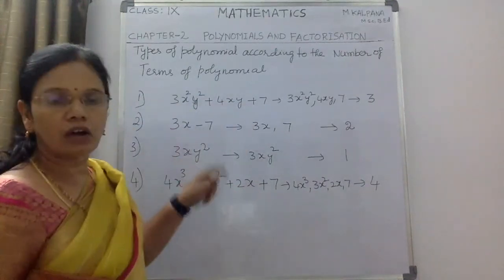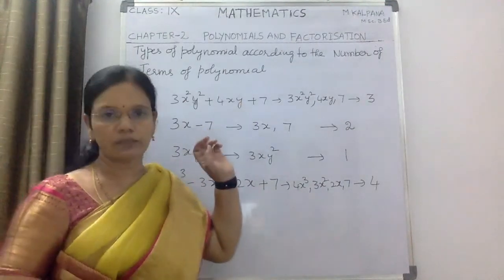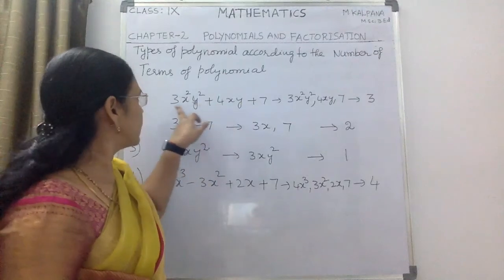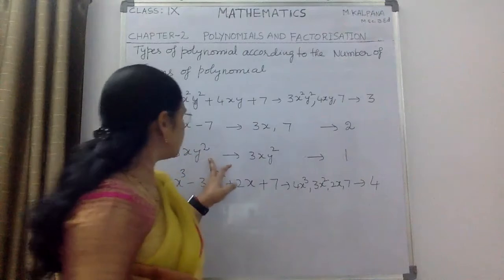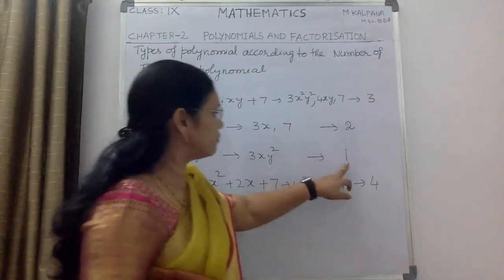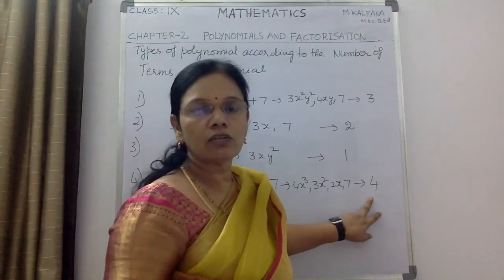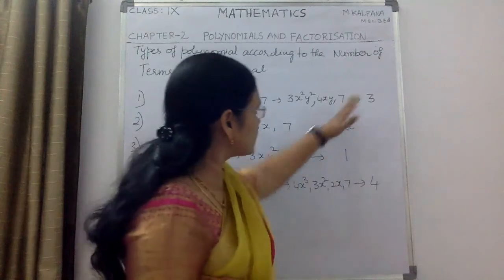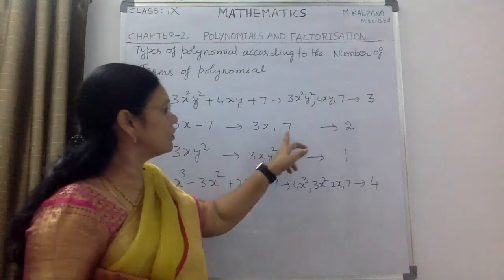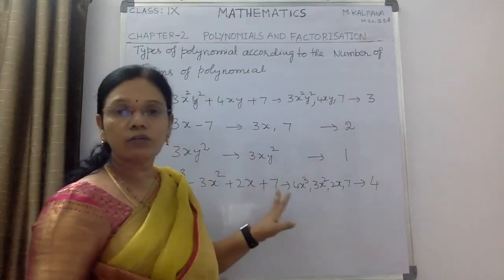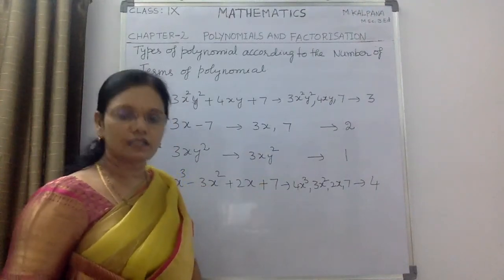So if we observe all these polynomials, each polynomial has a different number of terms. The first polynomial has 3 terms, the second polynomial has 2 terms, the third polynomial has only 1 term, and the fourth polynomial has 4 terms. So based on the number of terms given, we can divide the polynomials. Though all of these are polynomials, we give some special names to each polynomial based on the number of terms.